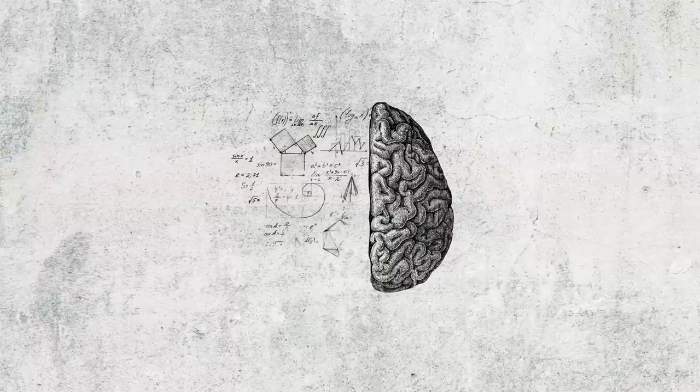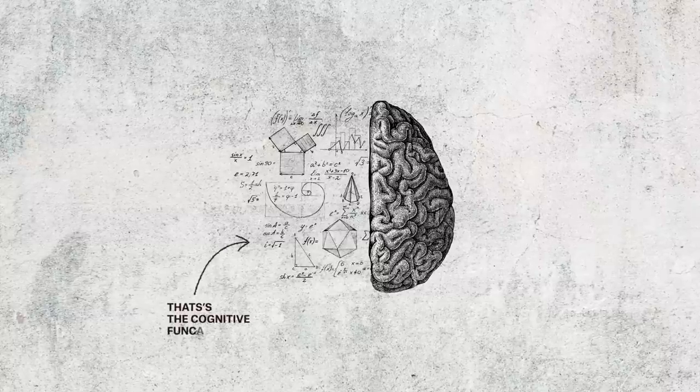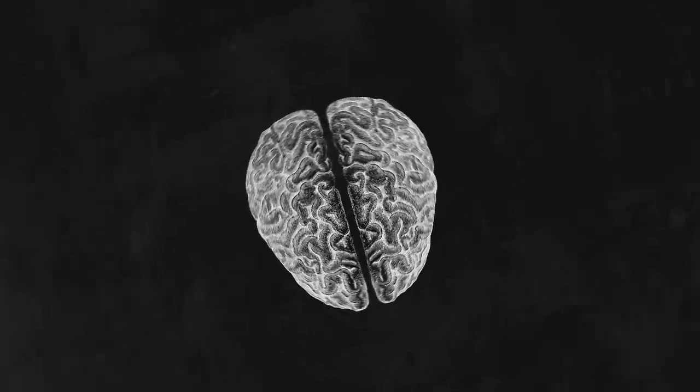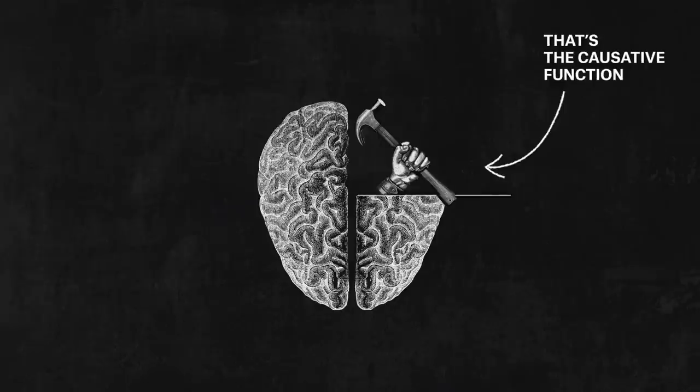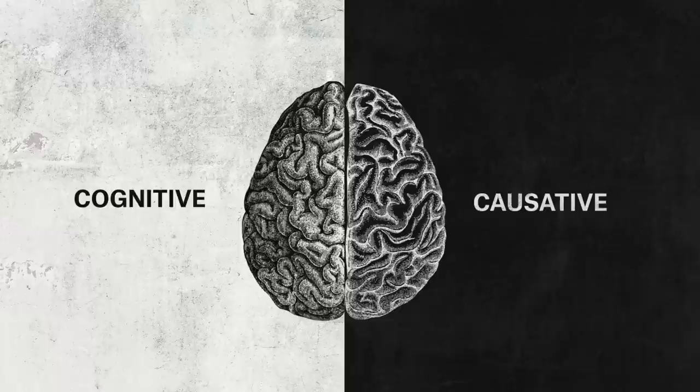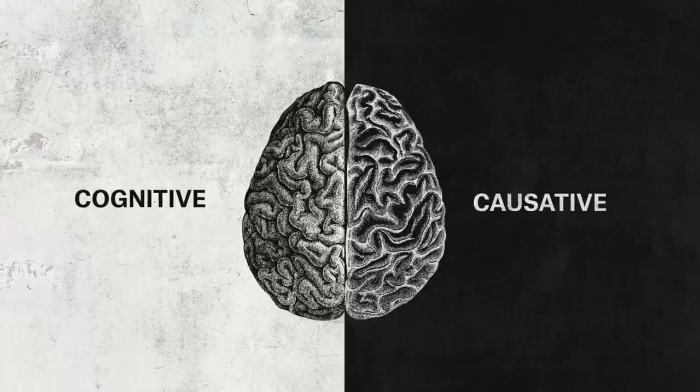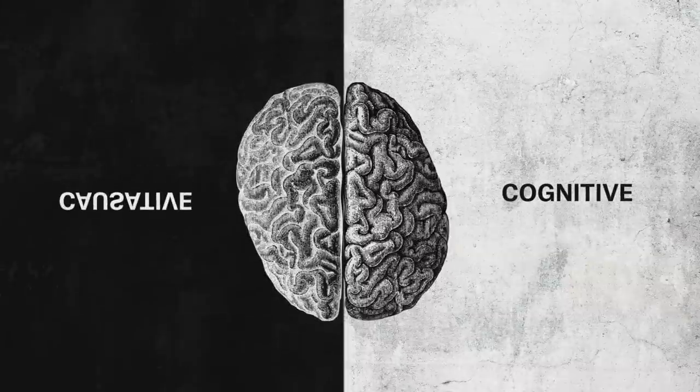On the one hand, people seek to understand the situation. That's the cognitive function. On the other, they try to make an impact. I call that the causative or manipulative function. The two functions connect the thinking agents and the situations in which they participate in opposite directions.